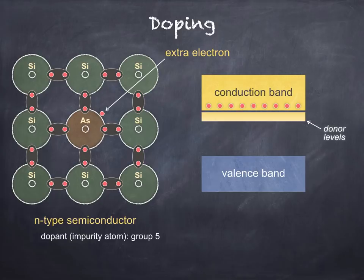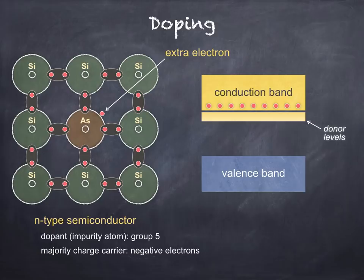Remember that when heating an intrinsic semiconductor, for each electron which jumped from the valence band to the conduction band, there was one hole left behind in the valence band. This meant that in an intrinsic semiconductor, electrons and holes exist in equal number. When we dope the semiconductor, however, this is no longer the case. In an n-type semiconductor, the majority charge carriers are electrons, and holes — which are still present due to the process described earlier — will be very much in the minority. Despite the majority charge carriers being negative electrons, an n-type semiconductor is still electrically neutral, since the impurity atom — arsenic in this case — will have an equal number of electrons and protons.